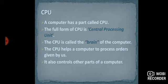The full form of CPU is central processing unit. CPU is called the brain of the computer. The CPU helps a computer to process orders given by us. It also controls other parts of a computer.